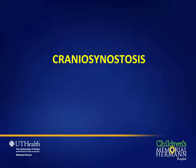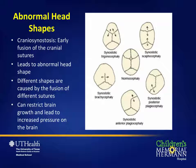Now changing topics to craniosynostosis. Craniosynostosis is the abnormal early fusion of cranial sutures. When this happens there's an abnormal head shape. The key to understanding this is that when there's an early fusion of a cranial suture, growth is restricted perpendicular to that suture. Each different head shape is caused by fusion of a different suture, and the resulting restriction of normal brain growth can lead to increased pressure on the brain.